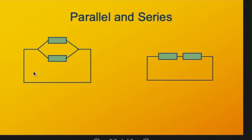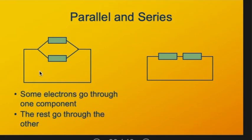On the left we show two components in parallel. As current comes along this conductor, there's a branch in the conductor, and some current can go through one and some current can go through the other component.